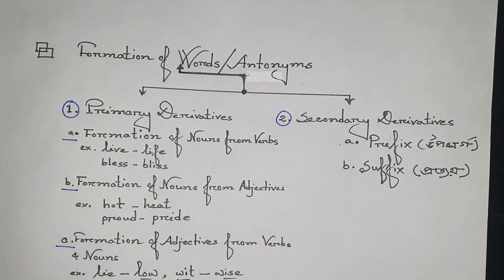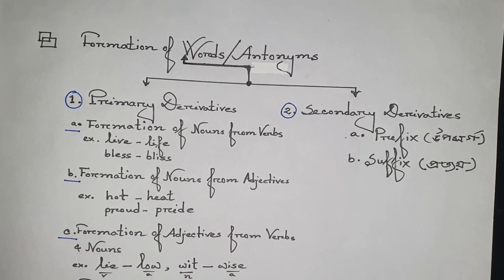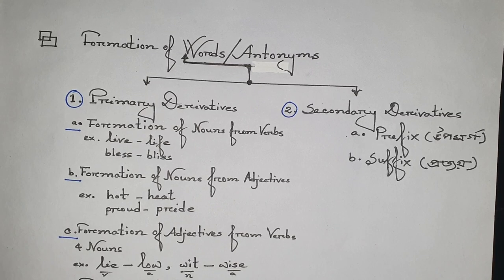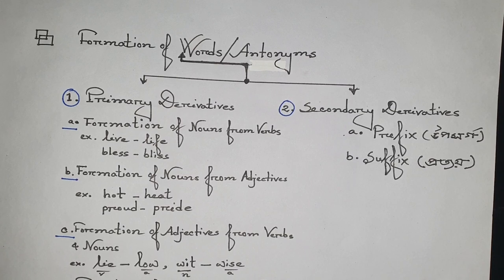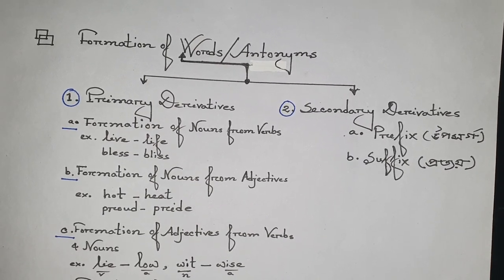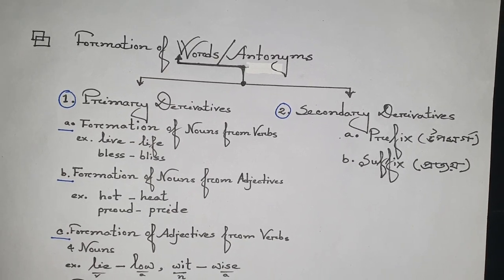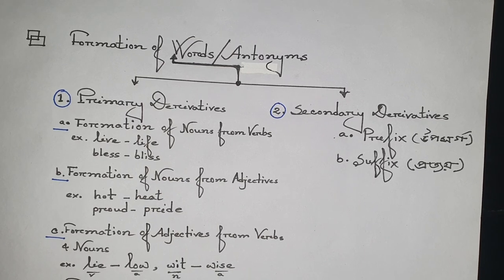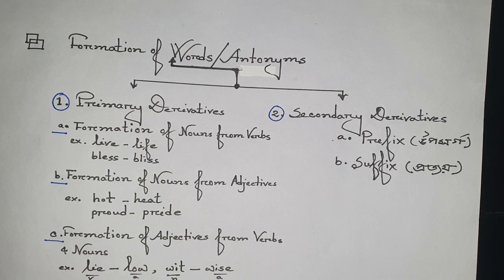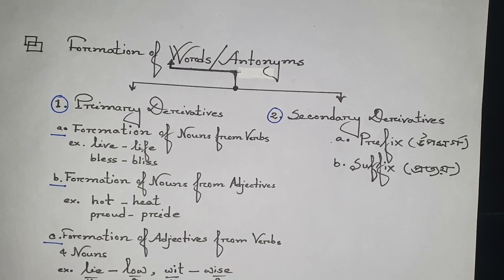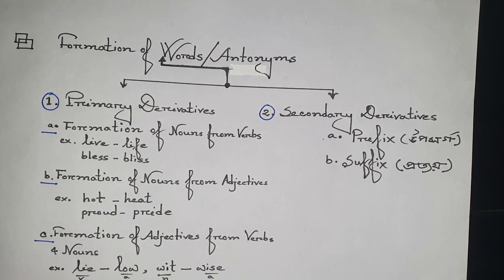Dear students, before going to discuss on suffixes and prefixes, I would like to discuss on formation of words and antonyms. Formation of words means to form a new word. There are so many techniques and methods to form new words. Here you can see two ways of formation of words: one is primary derivatives and another one is secondary derivatives.